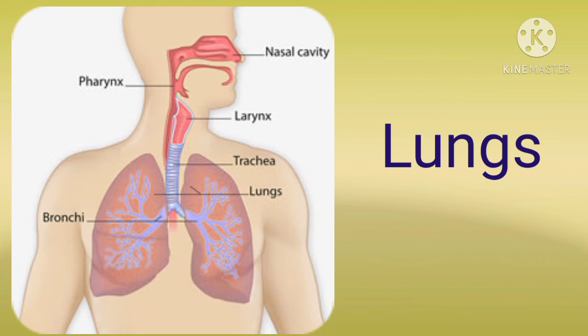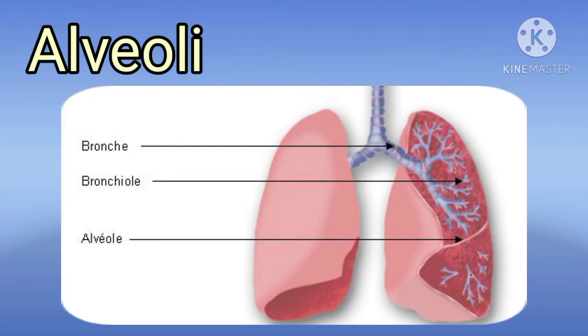Now we discuss about the lungs. The lungs are a pair of spongy elastic organs. They lie in the thoracic cavity, protected by the ribcage, and rest on a muscular sheet called the diaphragm. The lungs are protected outside by two membranes called the outer pleura and inner pleura. The space between the two membranes is filled with fluid called pleural fluid.